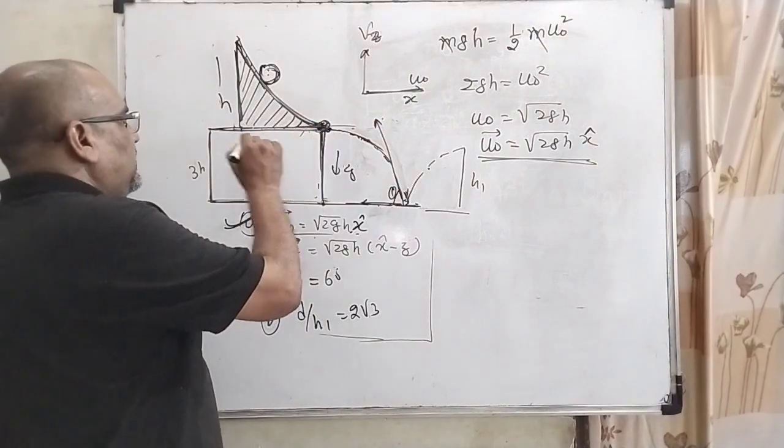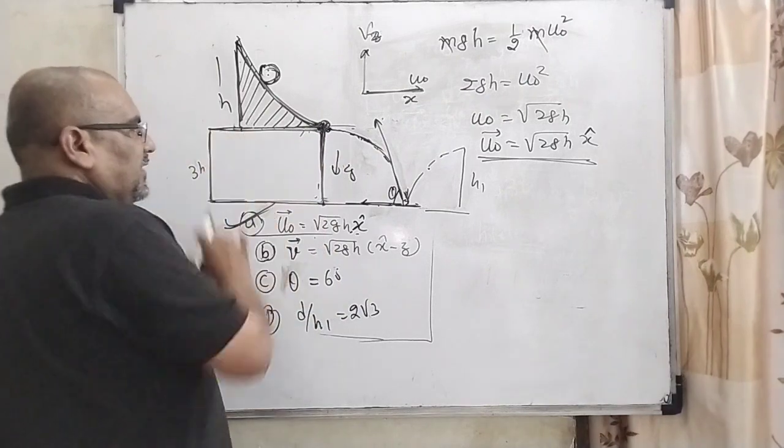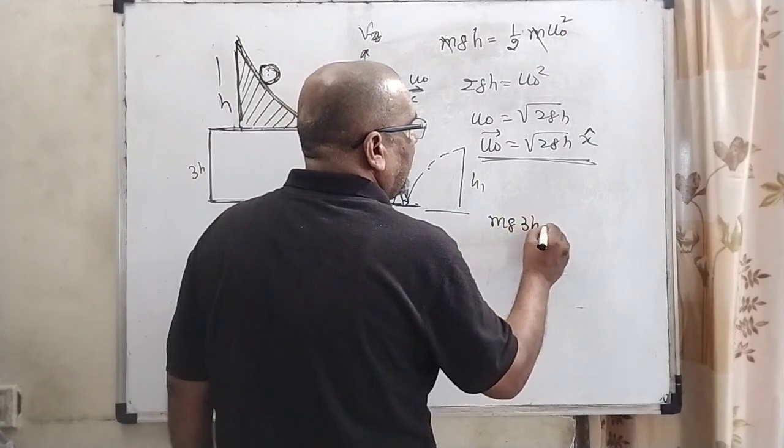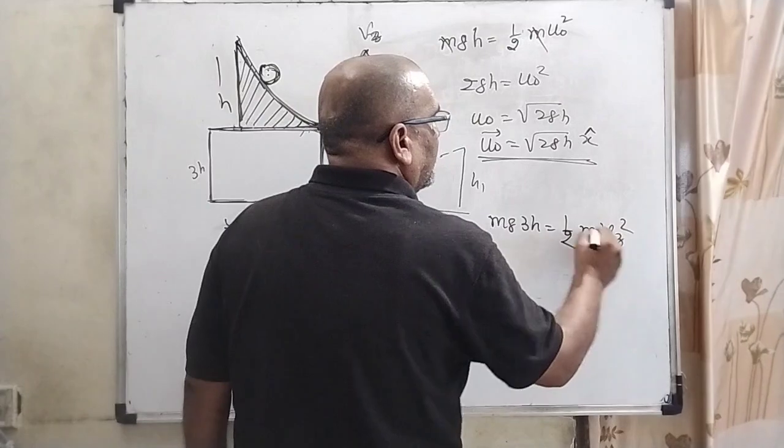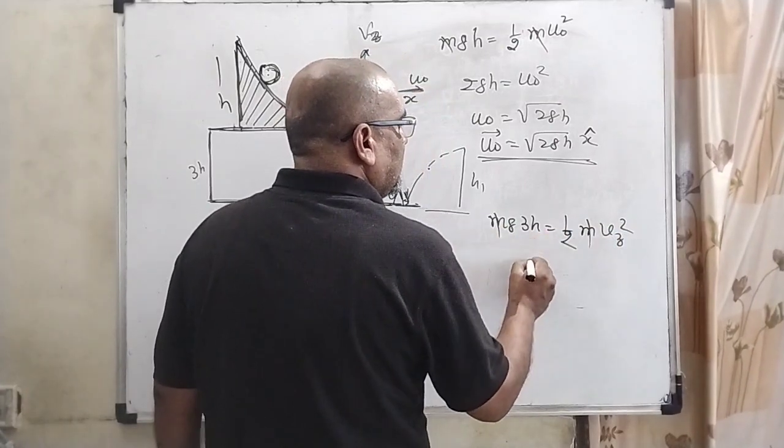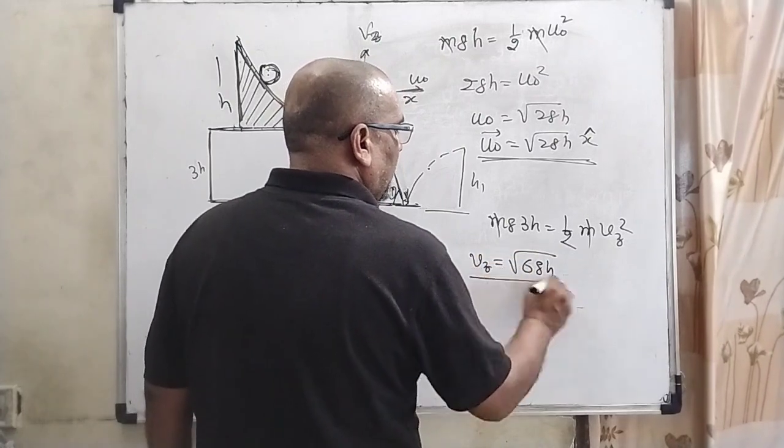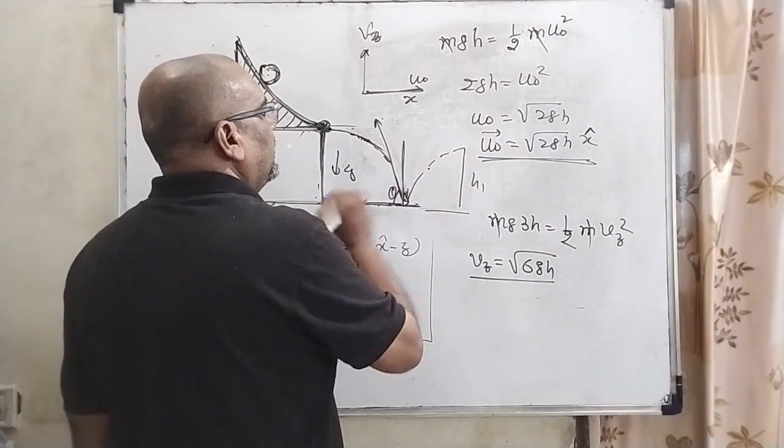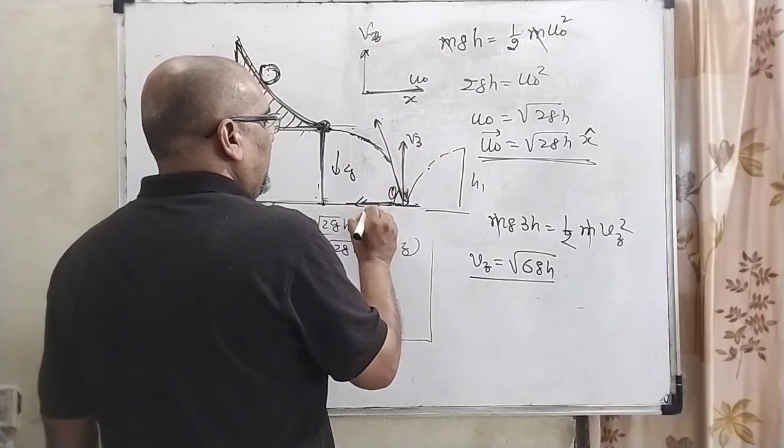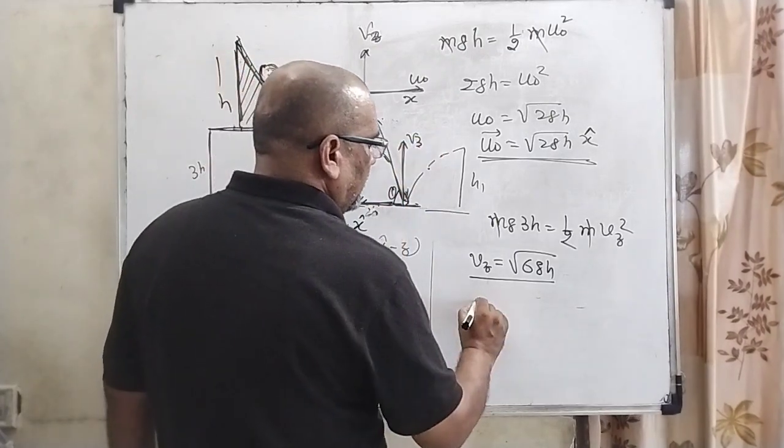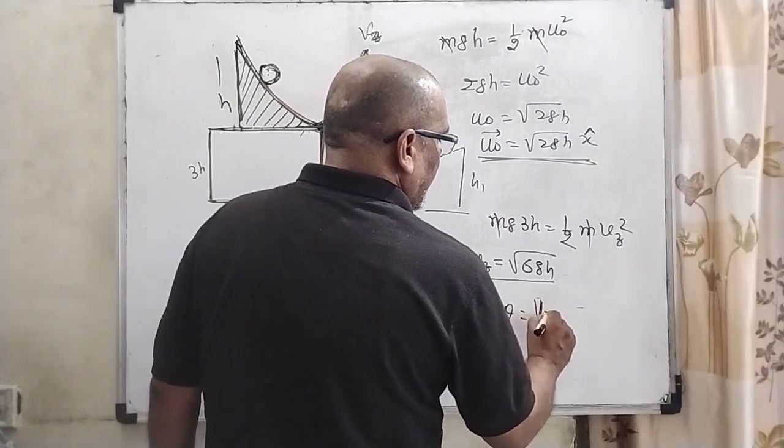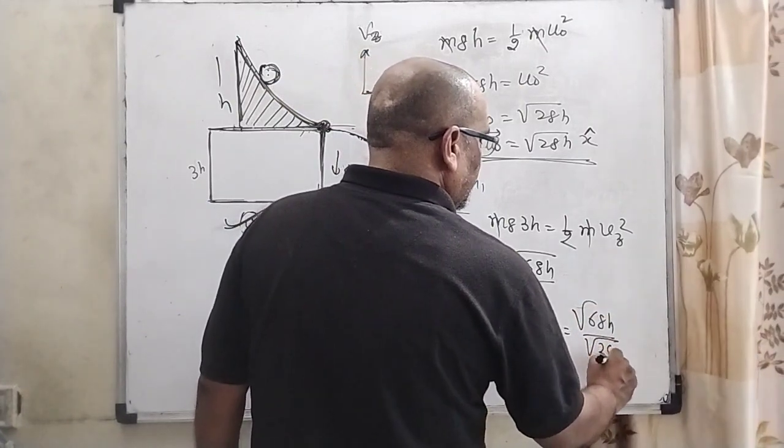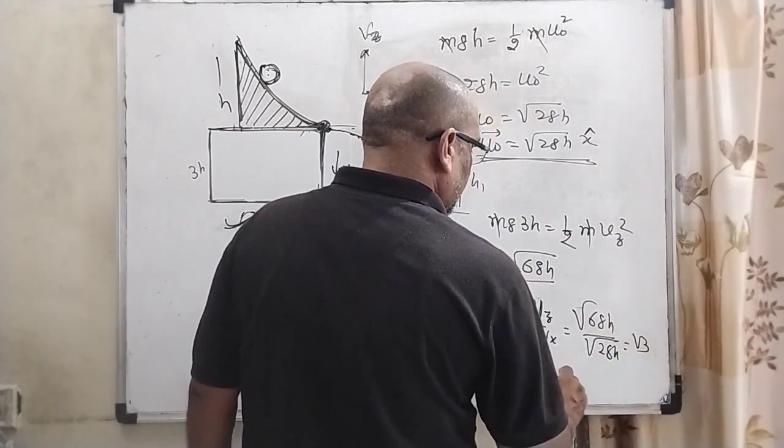Now after reaching the terrace, the height is 3h. For total height 3h, we have mg times 3h equals 1/2 m vz squared. After canceling m, we get 2 times 3gh, so vz equals root 6gh. Now we find tan theta equals vz upon vx, which is root 6gh upon root 2gh, equals root 3. Therefore, theta equals 60 degrees.